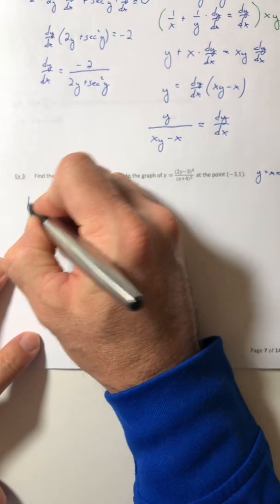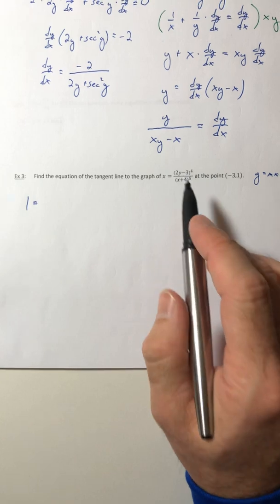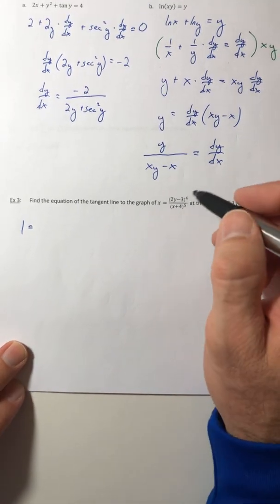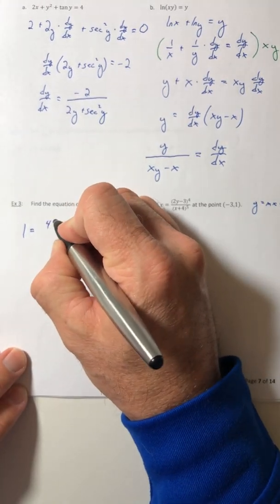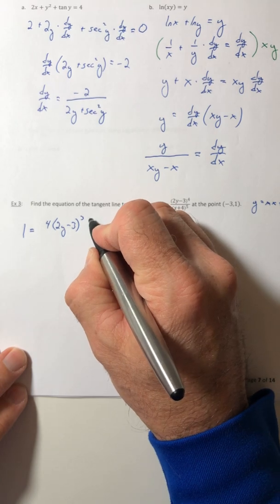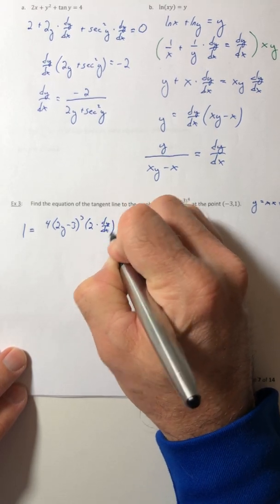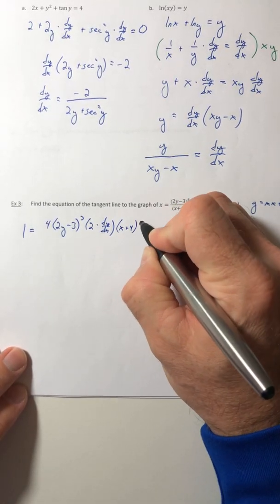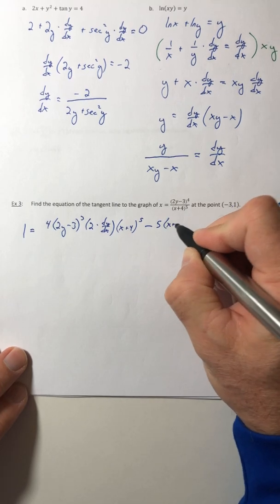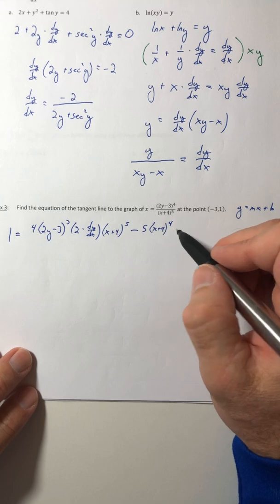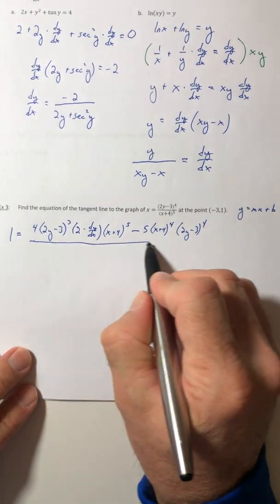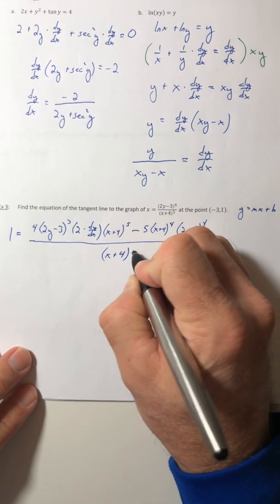So the derivative of x is 1. Now I need to use the quotient rule. So the derivative of the top, and now right now I've got to use the chain rule. So the power comes down, decreases by 1, multiply by the derivative of the inside, which will be 2 times dy/dx, and then times the bottom. And then minus, now it flips. So the derivative of the denominator, using the chain rule again. Derivative of the inside is a 1, so I don't need it. And then times the top, all over the denominator squared.